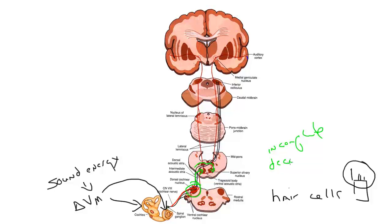And that incomplete decussation means that where are these axons, synapses? In the superior olives, neurons are binaural.